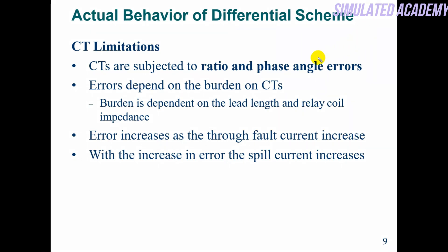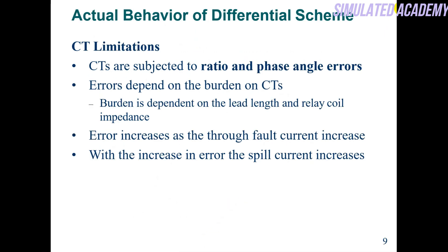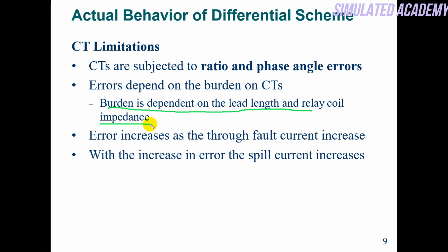There are some CT limitations when using differential protection. Matching the turns ratio and phase angle of all CTs is very difficult, because we use two CTs — one on the primary side and one on the secondary side. Matching their turns ratios is very difficult, which can cause a mismatch, and that mismatch current will pass through the relay, causing it to operate incorrectly. Secondly, burden — burden impedance depends on the load, line length, and relay coil impedance.